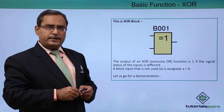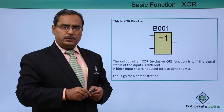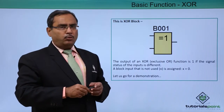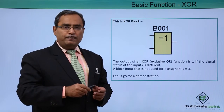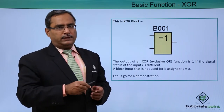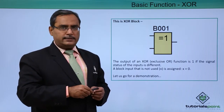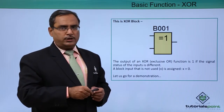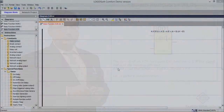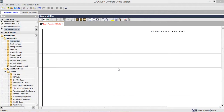Let us go for the practical demonstration where we shall show how this XOR block can be used and how to implement the XOR block using the ladder diagram. We know that XOR is having the Boolean function: A XOR B is equal to A-bar B plus A B-bar.